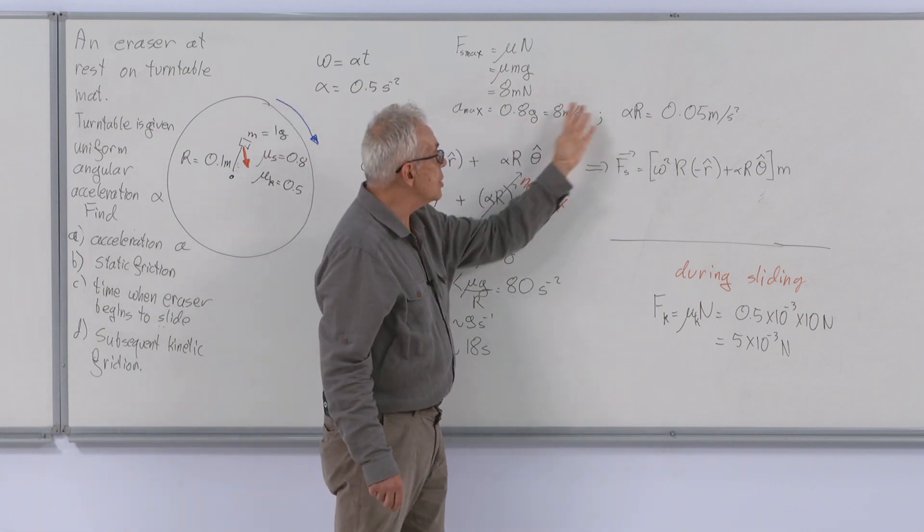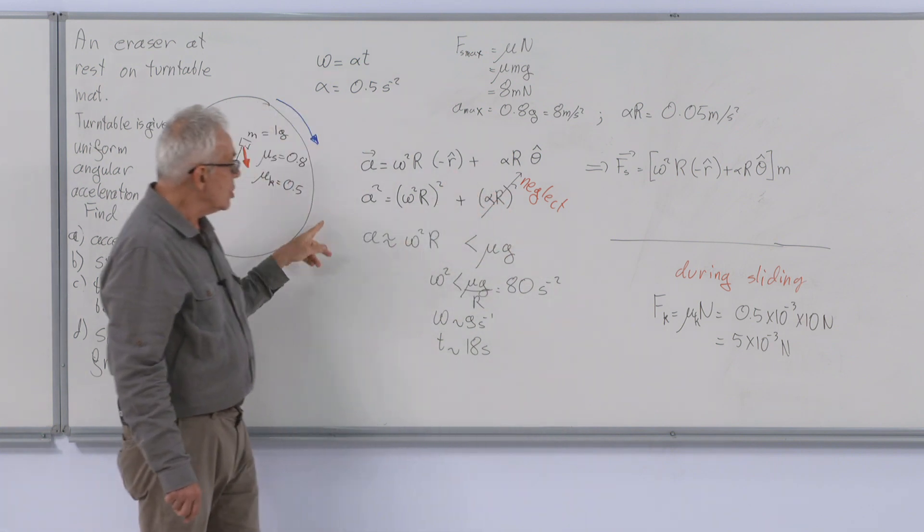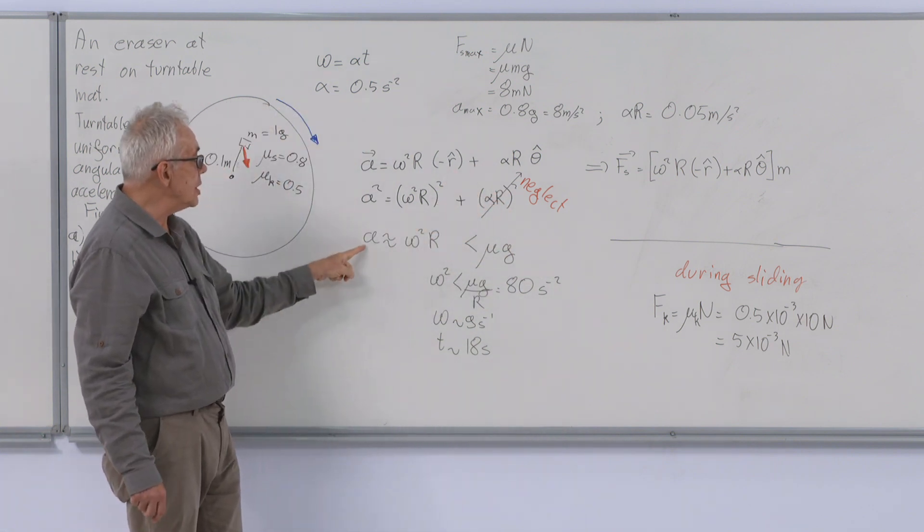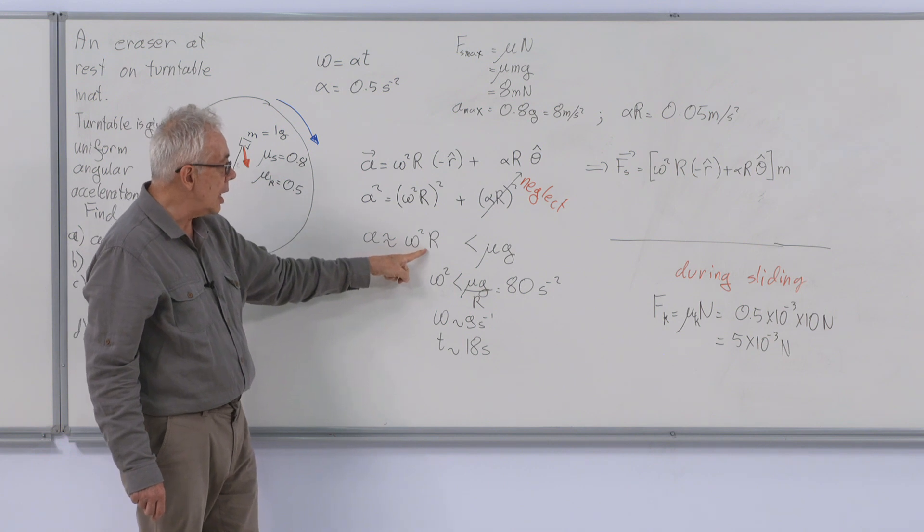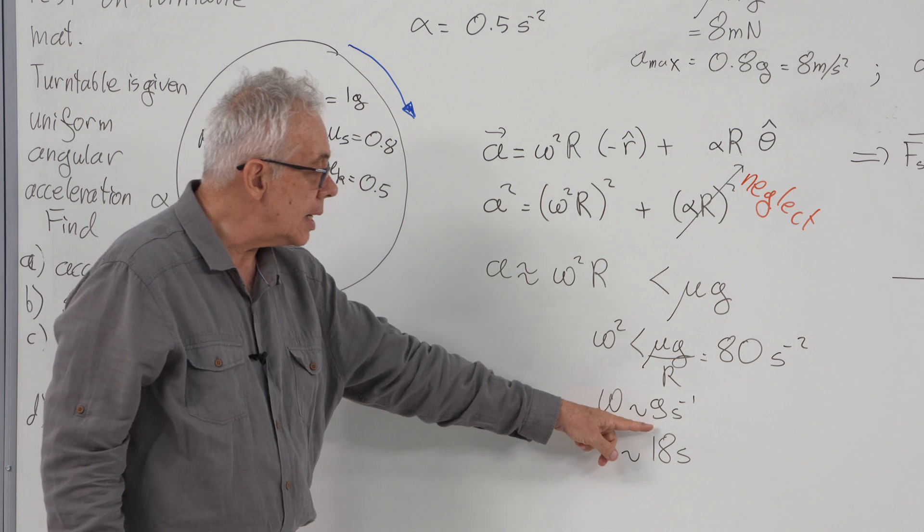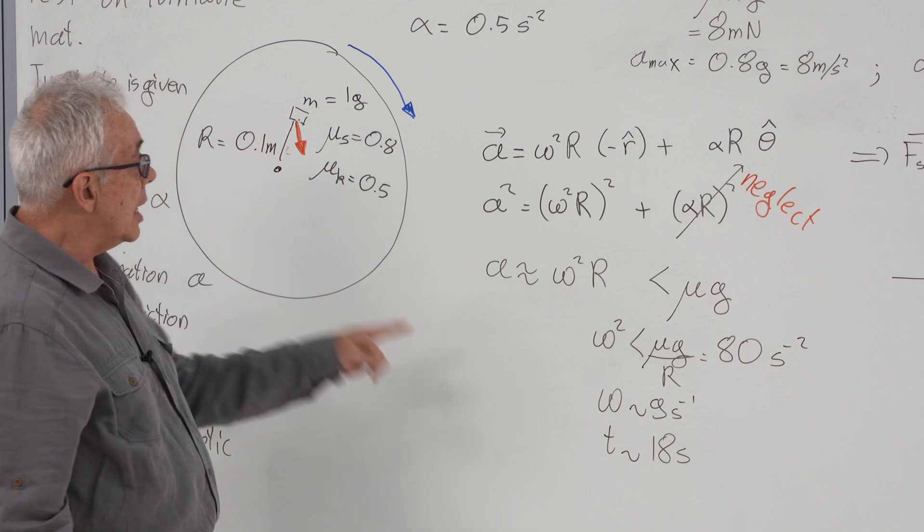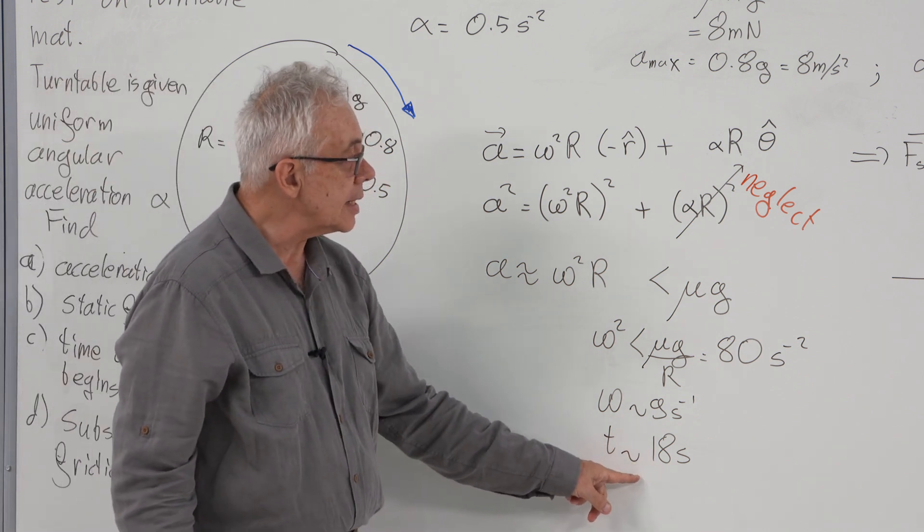So we use the approximation. A is omega square r less than mu g gives us omega about 9 radians per second, and that happens at time 18 seconds.